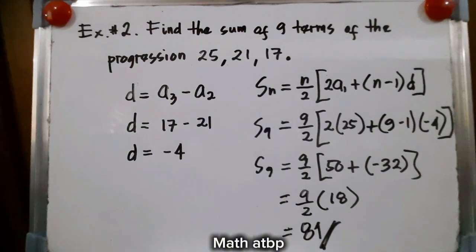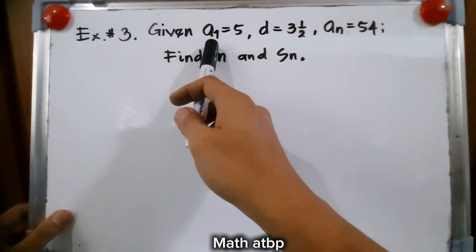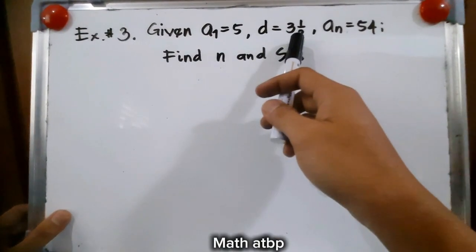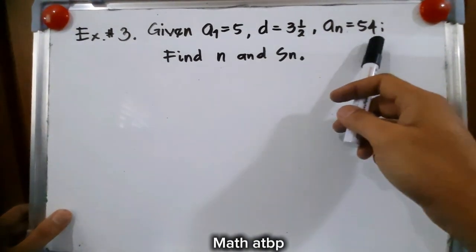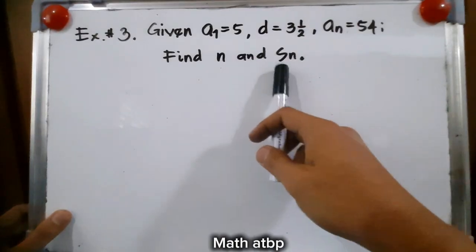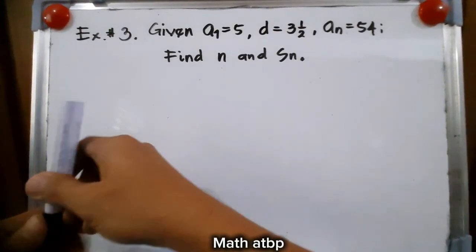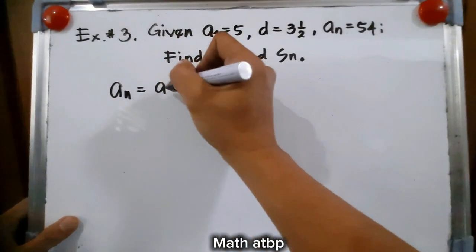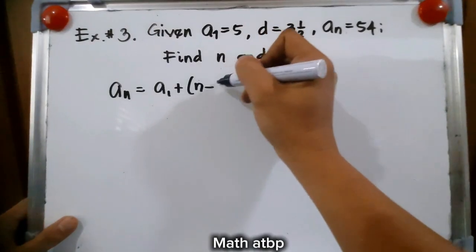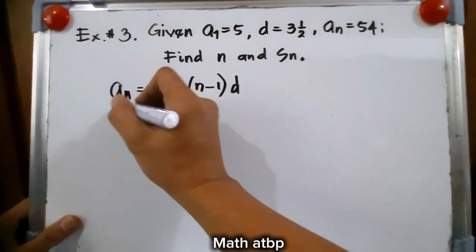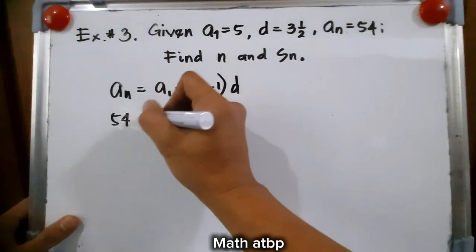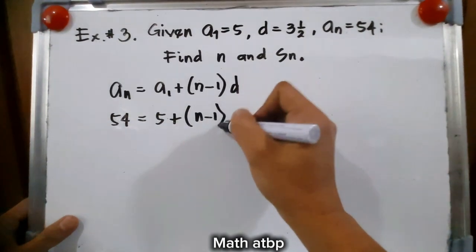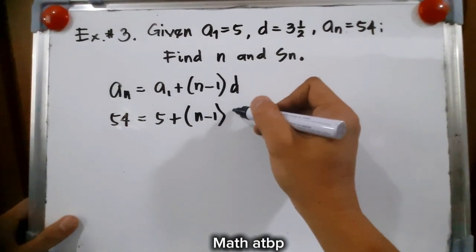I hope you can follow. Example number 3: given a sub 1, or the first term, is equal to 5; the common difference is 3.5; and a sub n is equal to 54. Let us find n and s sub n. To find n, we use a sub n is equal to a sub 1 plus n minus 1 times d. So 54 equals 5 plus the quantity n minus 1 times 3.5.